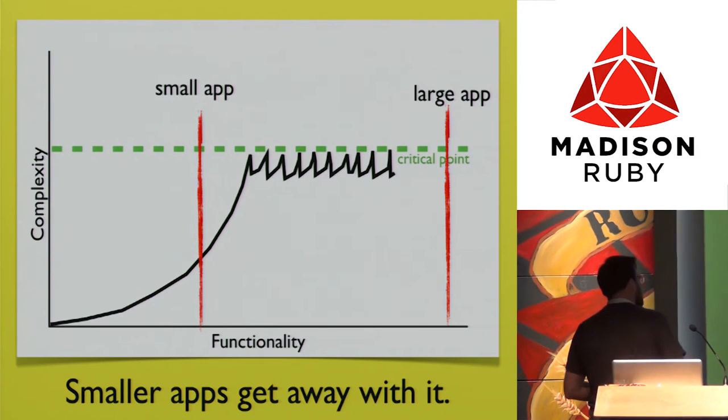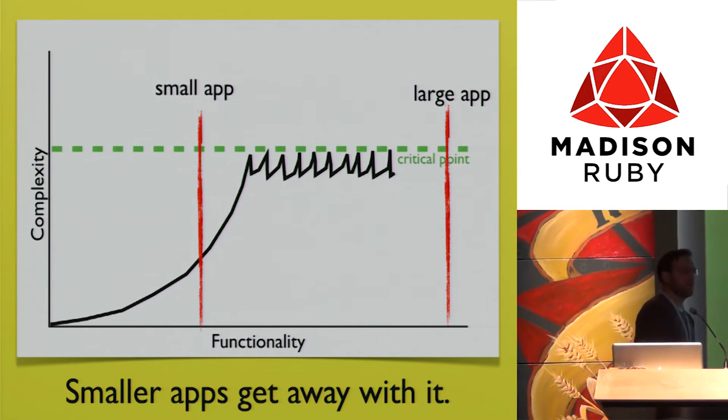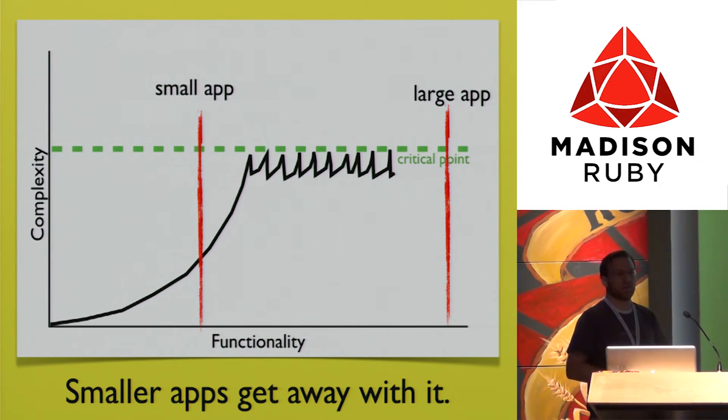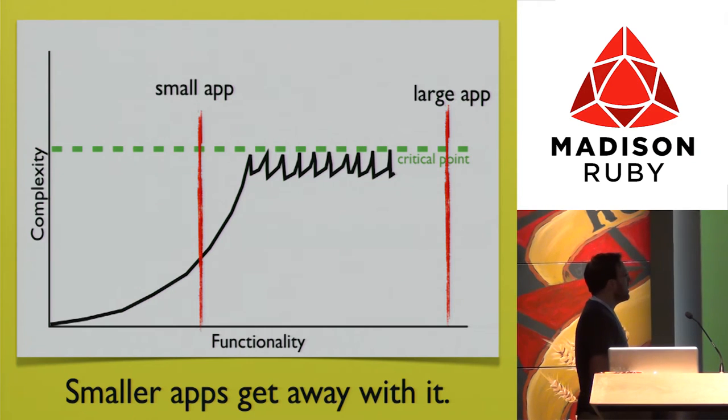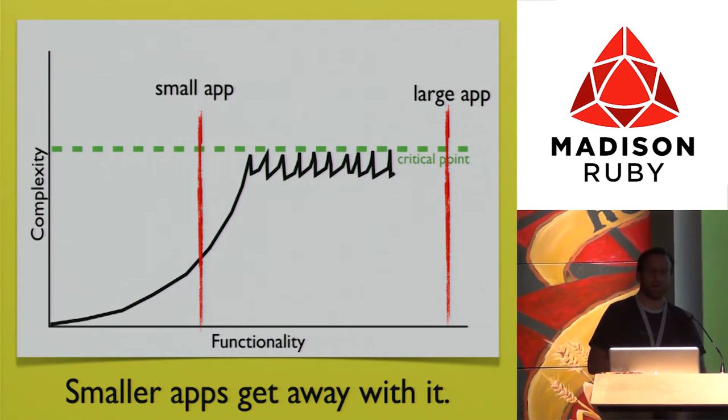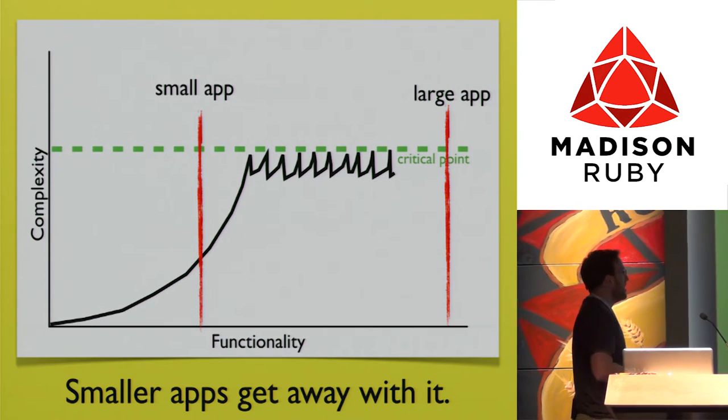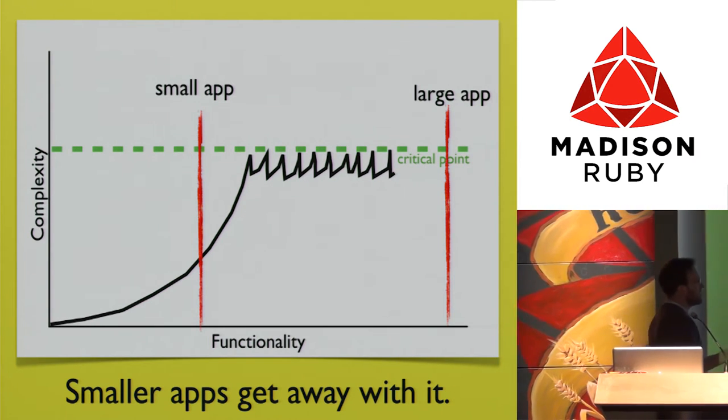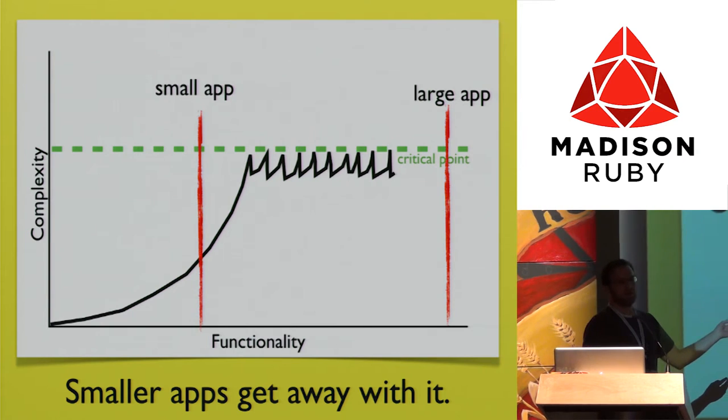One exception to this rule is small applications—apps that are really narrowly focused, well defined, and have a clear end date. They can get away with things you can't do in a larger, longer-running application because there's a good chance you'll be done before you ever get up there, so it's not really noticeable.